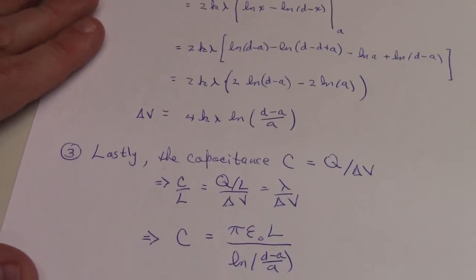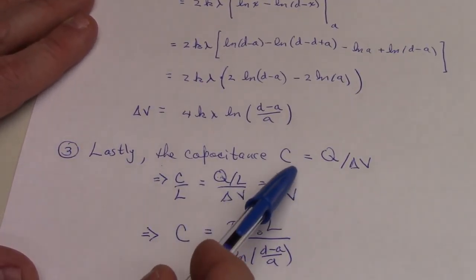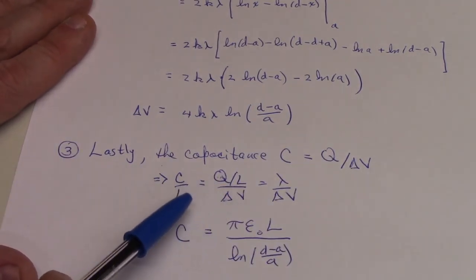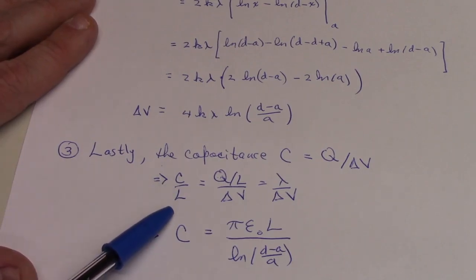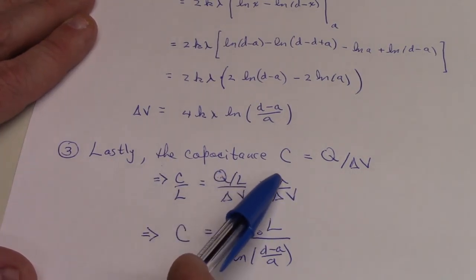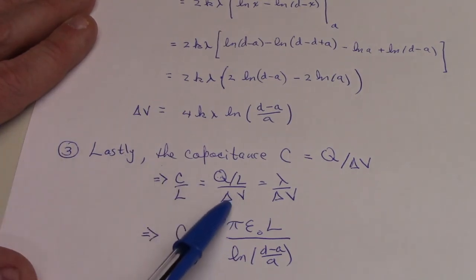The last step is to simply compute the capacitance. We know that capacitance is q over the change in potential. Let's divide c by l and q by l, so the capacity per unit length is then just q over l, or lambda, divided by delta v. But we computed delta v up here, so c, when you do the algebra, turns out to be pi epsilon naught times l, divided by the natural logarithm of d minus a over a.